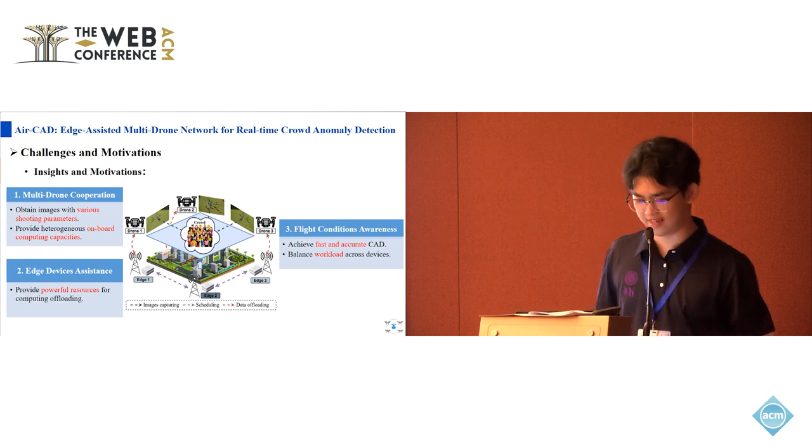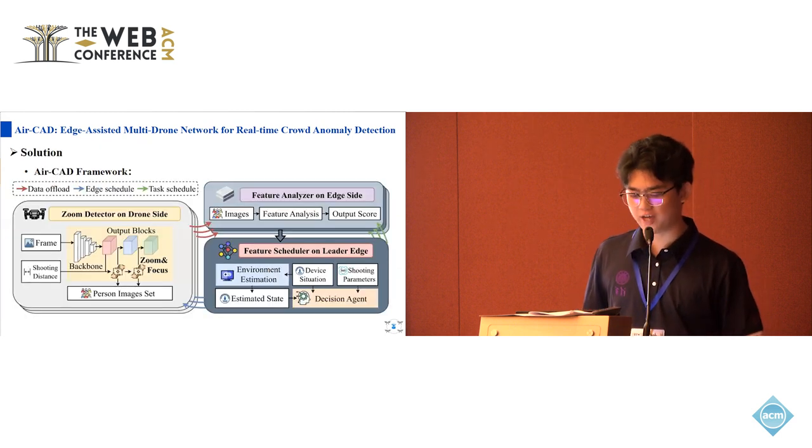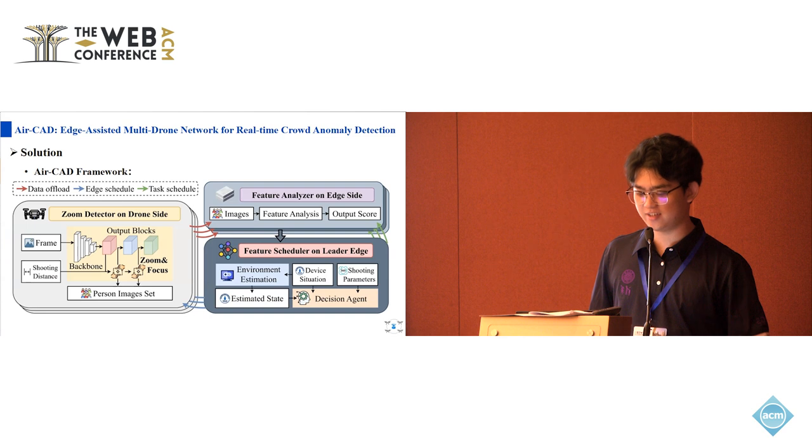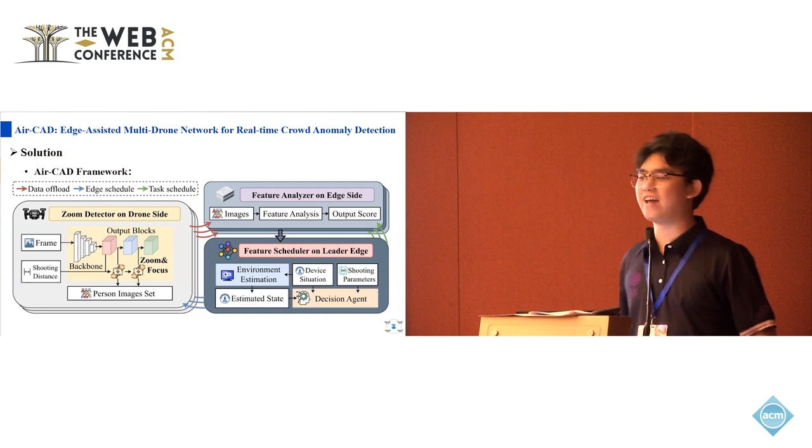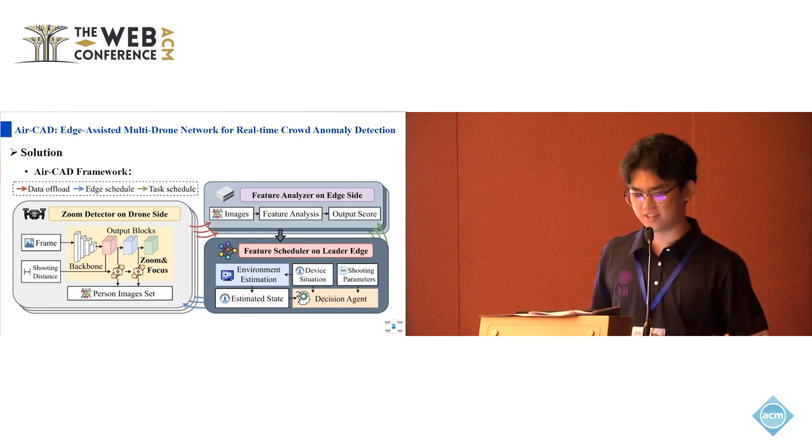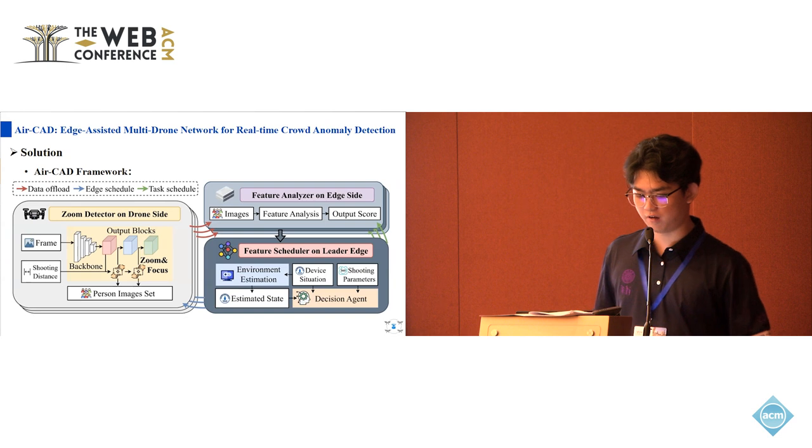We designed ALCAD, an edge-assisted multi-drone network for real-time crowd anomaly detection. Here is an overview of our framework. ALCAD mainly consists of two types of devices: a set of drones with vision and computing capabilities, and a set of edge devices. One of the edge devices is selected as the leader edge.